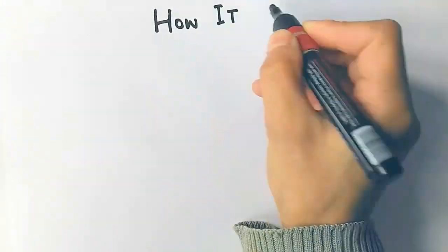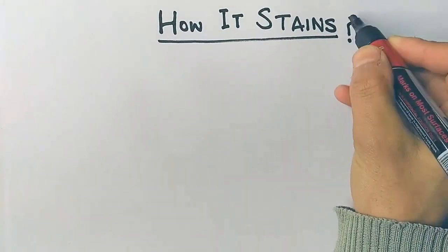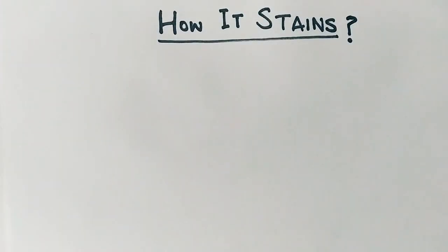Hello friends, in this video we'll be discussing how it stains. Stains here refers to a gram staining technique. In gram staining, bacteria which retain crystal violet dye are gram positive, while others which do not retain crystal violet and get counter-stained by safranin dye are gram negative bacteria.